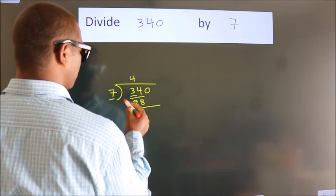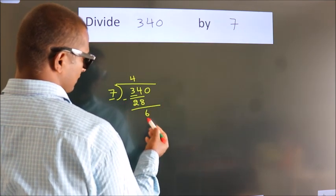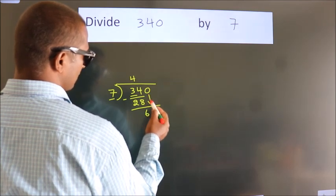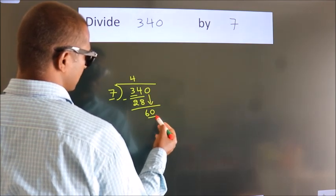Now we should subtract. We get 6. After this, bring down the beside number. So 0 down. So 60.